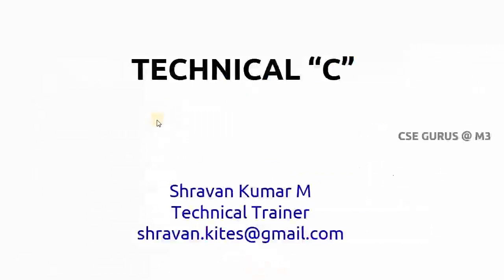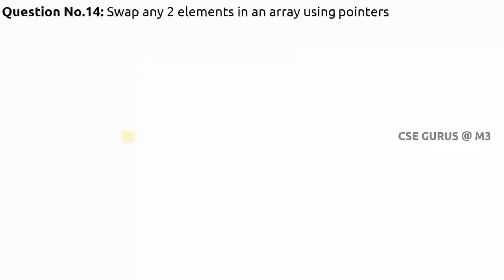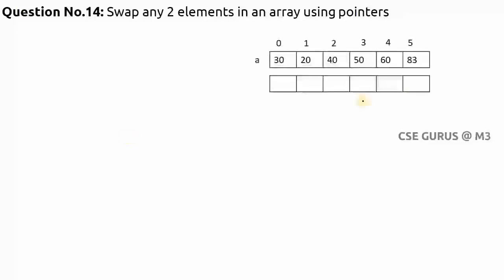Welcome to the video lectures on Technical C by Sravankumar Mantri. Coming to question number 14: swap any two elements in an array using pointers. Let's take an array with 6 elements. I want to swap element a[1] and a[4], where a[1] is 20 and a[4] is 16.